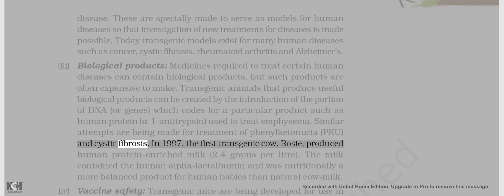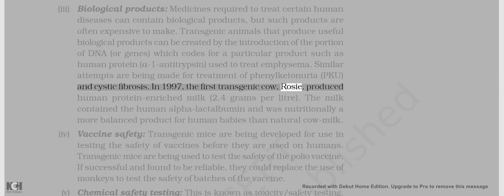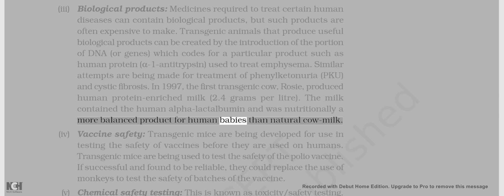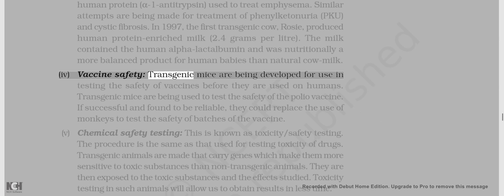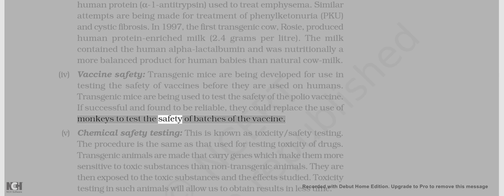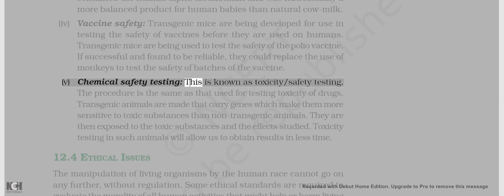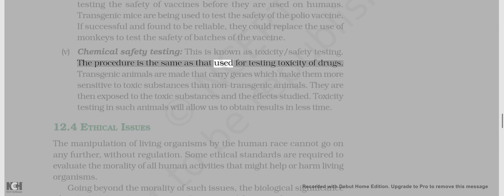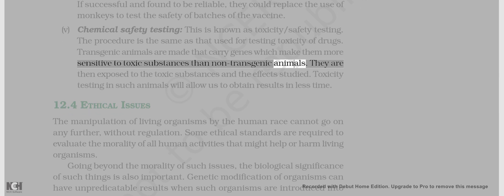In 1997, the first transgenic cow, Rosie, produced human protein-enriched milk at 2.4 grams per liter. The milk contained human alpha-lactalbumin and was nutritionally a more balanced product for human babies than natural cow milk. 4. Vaccine safety — transgenic mice are being developed for use in testing the safety of vaccines before they are used on humans, including testing the safety of the polio vaccine, potentially replacing the use of monkeys. v. Chemical safety testing — also known as toxicity testing — transgenic animals are made to carry genes which make them more sensitive to toxic substances than non-transgenic animals, allowing results to be obtained in less time.